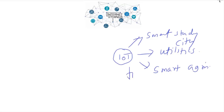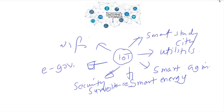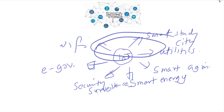IoT applications include smart energy, security surveillance, e-governance, and Wi-Fi. These different applications are all related, and whenever we need to interconnect things, we need to sense that particular data, collect it, transfer it, and if there is a line of action behind it, then we can say yes, this is IoT.